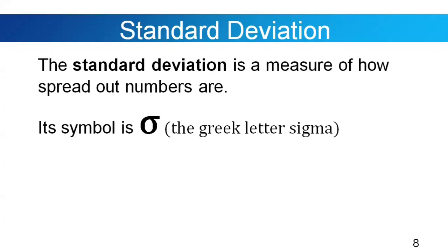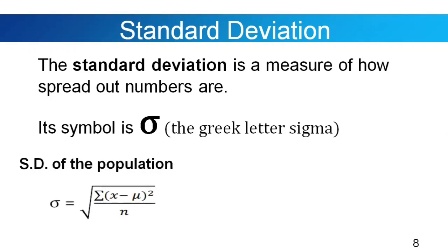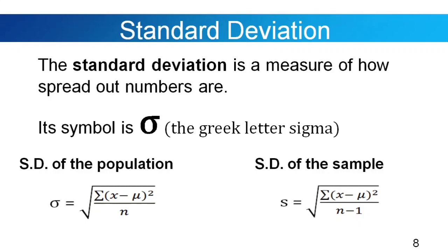Now let's go to the standard deviation. The standard deviation is a measure of how spread out numbers are; its symbol is the Greek letter sigma. The standard deviation of the population is sigma equals the square root of the summation of (x minus mu) squared all over n. The standard deviation formula of the sample is s equals the square root of the summation of (x minus mu) squared all over n minus 1.